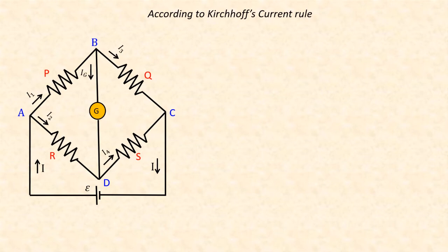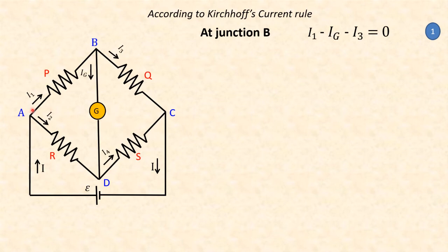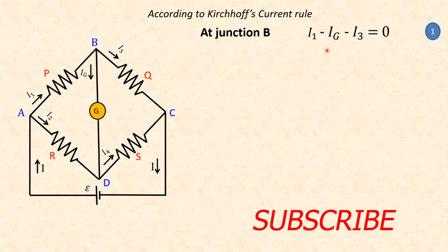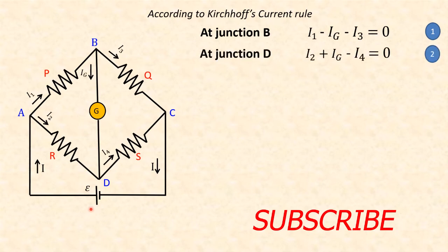According to Kirchhoff's current rule at junction B: the current entering junction B is I1, and the currents going out of the junction are IG and I3. Current entering is taken as positive and current leaving is taken as negative. So I1 minus IG minus I3 is equal to 0. At junction D, the current entering the junction is I2 and IG, and the current leaving is I4. So I2 plus IG minus I4 is equal to 0. These are the first two equations.